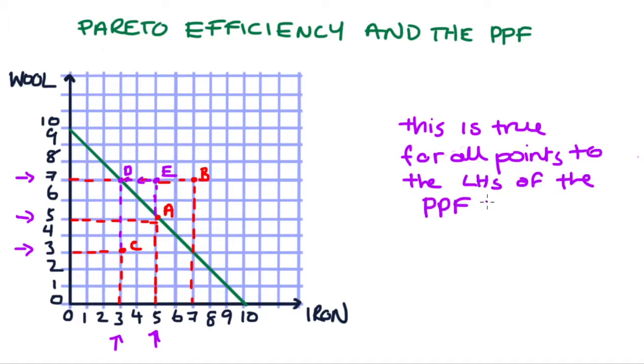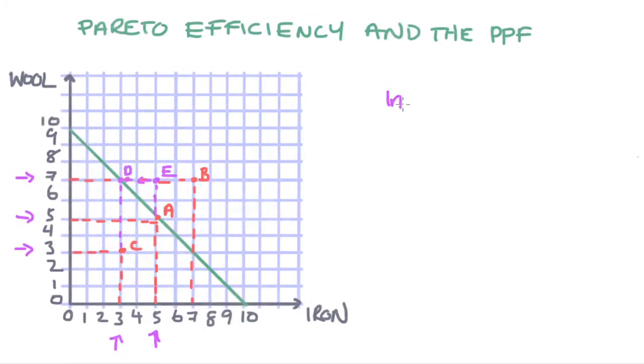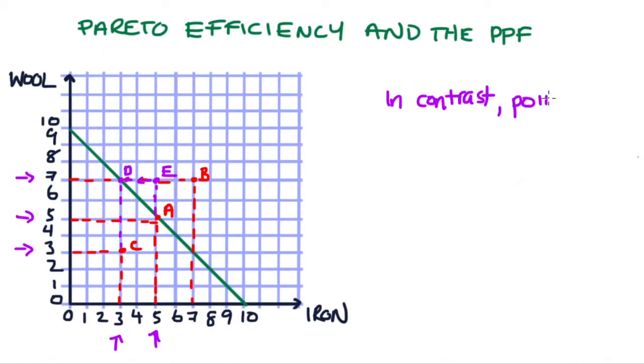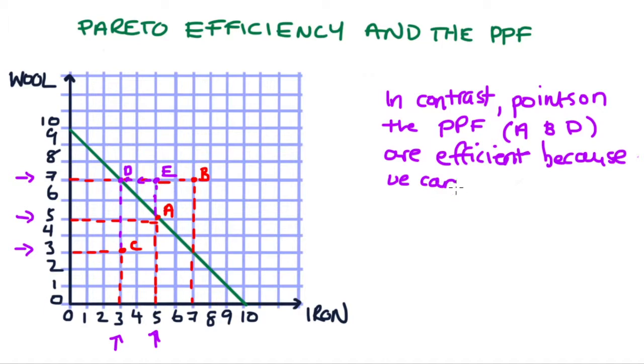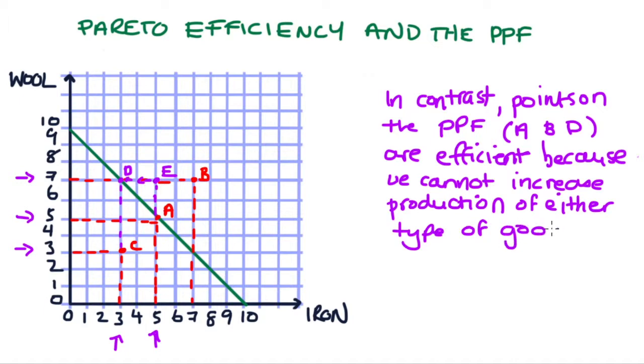In contrast to this, points of allocation that lie along the PPF frontier, such as A and D that I've got here, are going to be efficient because we cannot increase the production of either the horizontal axis good or the vertical axis good without somehow finding our way into the territory of the unobtainable, unless we decrease the production of the other good.